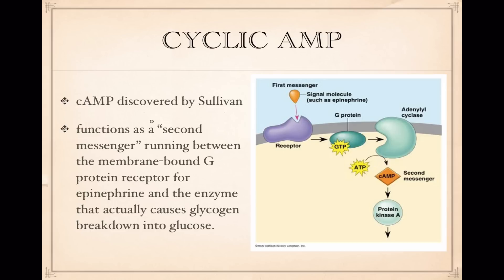Cyclic AMP was discovered by Sullivan when he was doing his experiments with epinephrine. What Sullivan noticed is that when the signal molecule, such as epinephrine, bonds to the receptor and causes the response, there was a cytoplasmic increase in the concentration of a molecule called cyclic AMP, or cAMP. He was able to show that cAMP is acting as a relay molecule to a protein kinase cascade of phosphorylation. So he discovered the idea of second messengers — molecules like cyclic AMP that act as a go-between between the first messenger and the cascade of transduction that generates the signal. It was a very important discovery, and he won a Nobel Prize for this in the 1970s.